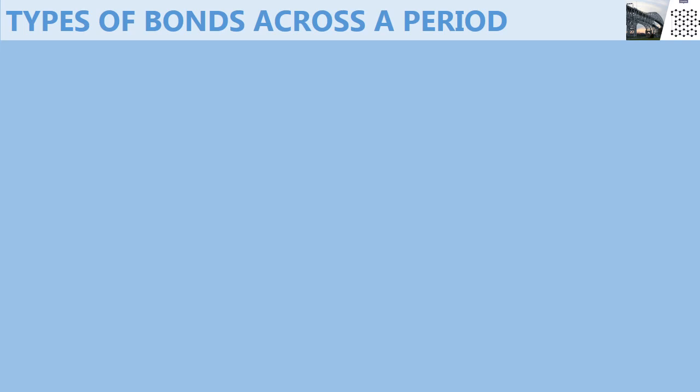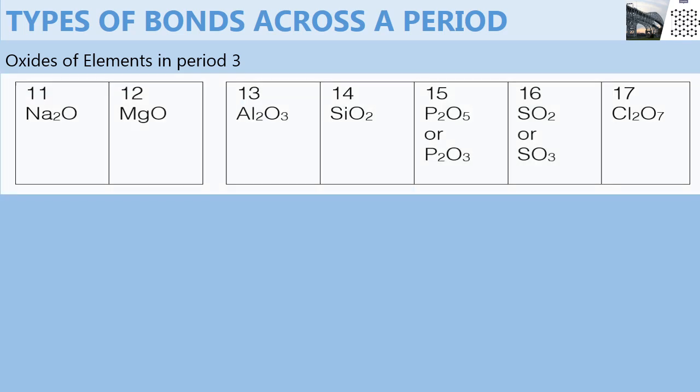Types of bonds across a period. We're going to consider the oxides of elements in period three, meaning sodium oxide, magnesium oxide, aluminium oxide, and so on.